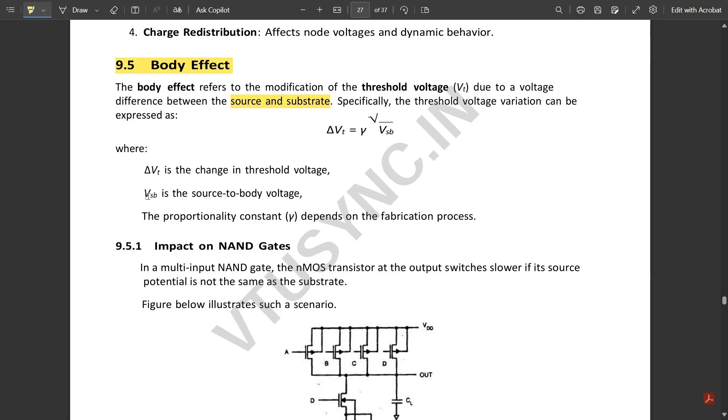Where ΔVt is the change in threshold voltage, Vsb is the source to body voltage, and gamma is the proportionality constant which depends on the fabrication process.